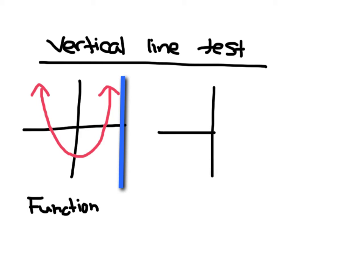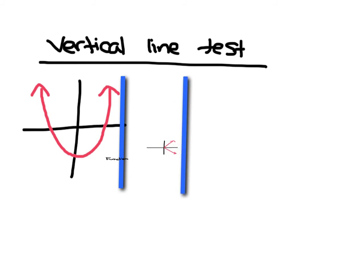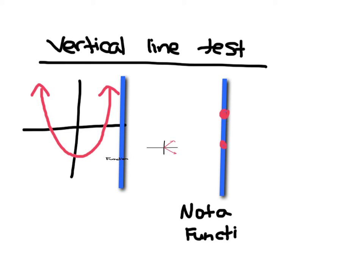What about something that looks a bit like this? When I try to do the vertical line test — coming across the graph, and you can do this with a pencil on your paper — notice I am hitting this relation in two different spots at the same time. Since I am hitting it at two different spots at the same time, this is not a function. So with the vertical line test: if you can run a vertical line over a relation and only hit one point at a time, it's a function. If you hit it more than once, it is not a function.